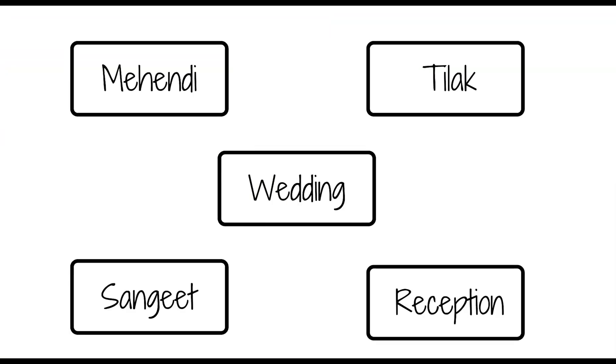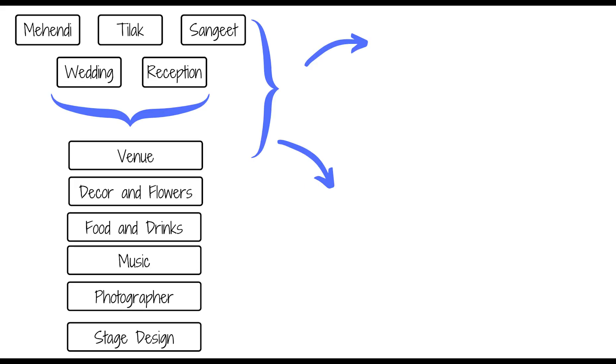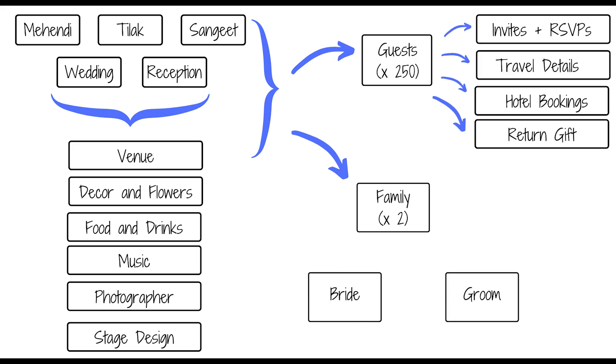So what are we doing this week? We are building a system to manage a wedding — my giant Indian wedding. A wedding is 5 events, and for each you have to do venue, music, decor, photography, and stage design. There are 250 guests plus the families and of course the bride and groom. For each guest you have to coordinate invites, travel, hotel, and gifts.